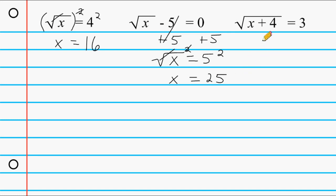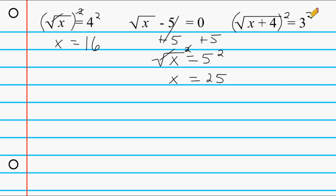Now with this third example we can see that this plus 4 is actually underneath the radical symbol, so we cannot move this 4 over to the other side of our equation. So what we have to do is take this entire quantity and raise it to the second power. And what we do to the left, we do to the right. On the left, the radical symbol and the exponent cancel each other out leaving us with just x plus 4, and on the right we have 3 squared which is equal to 9.